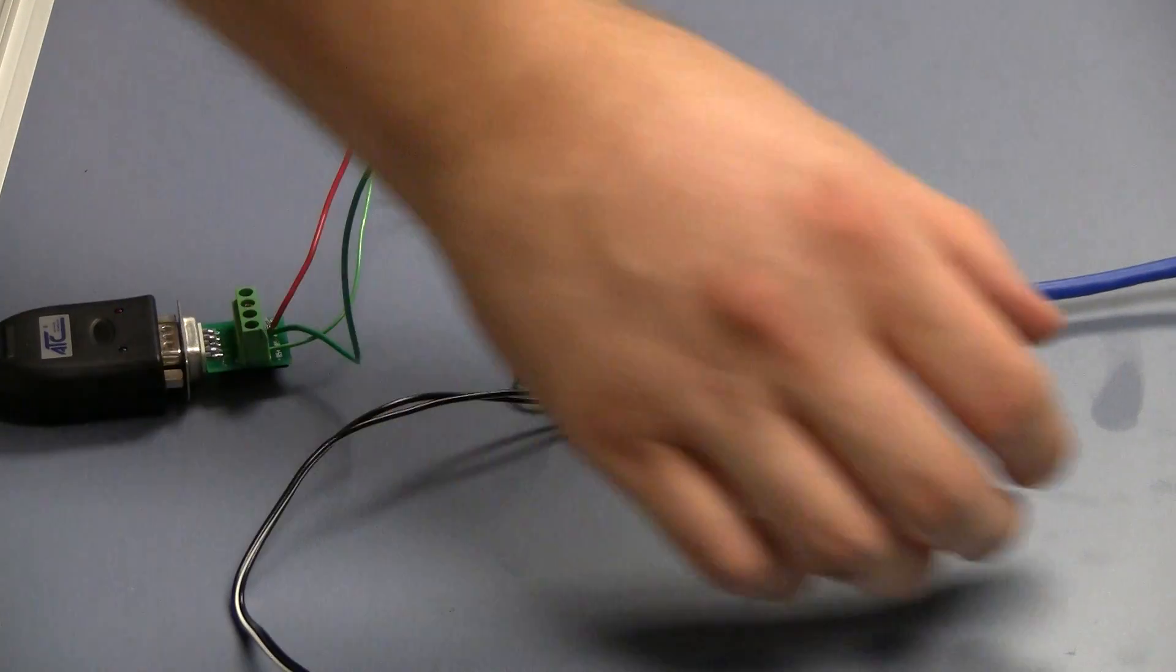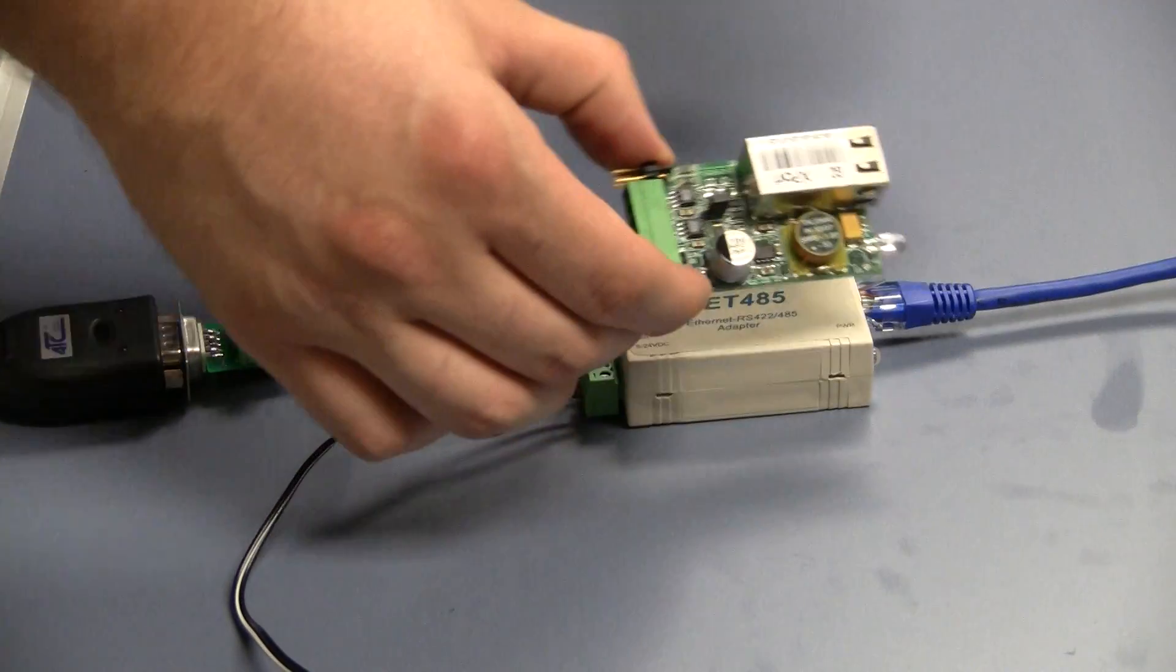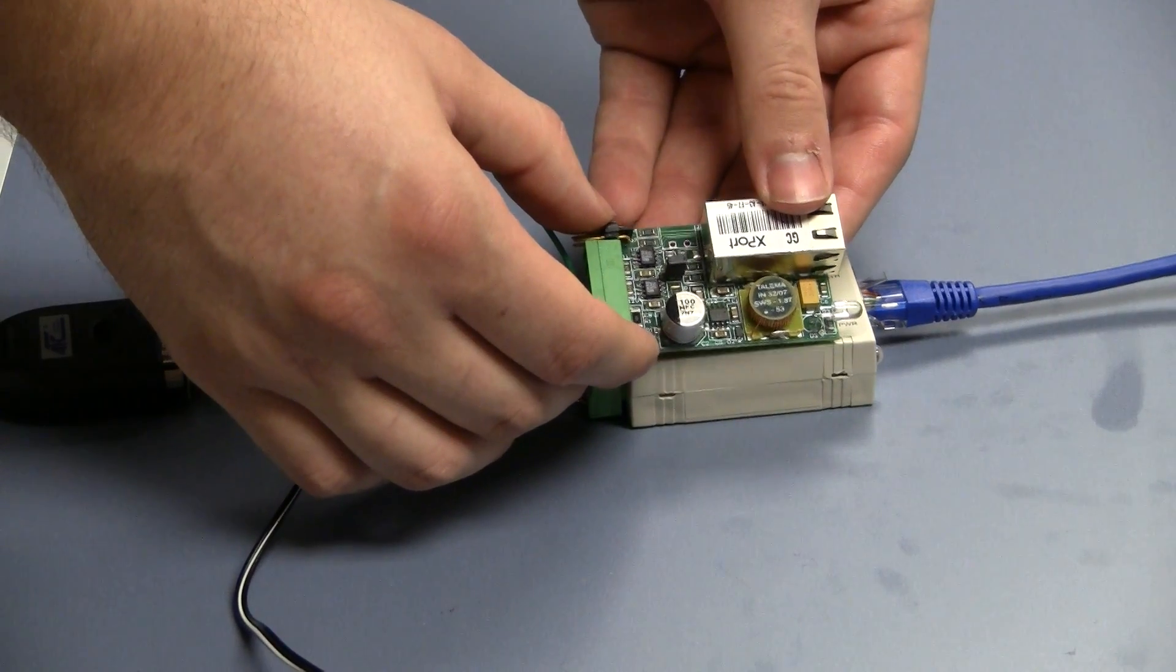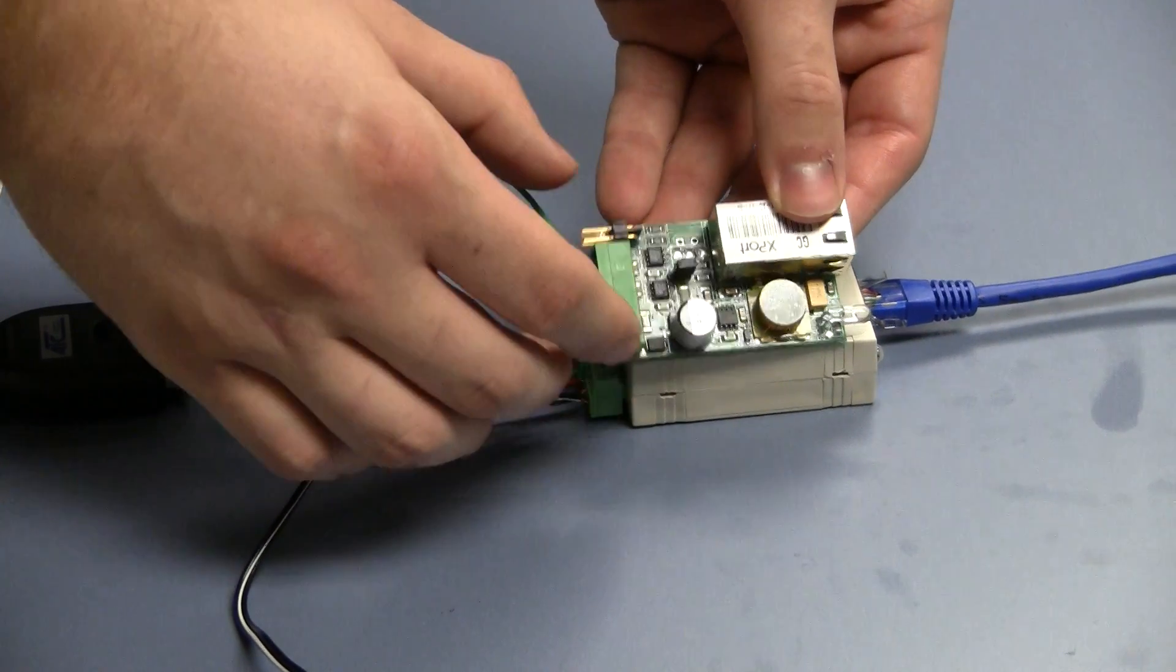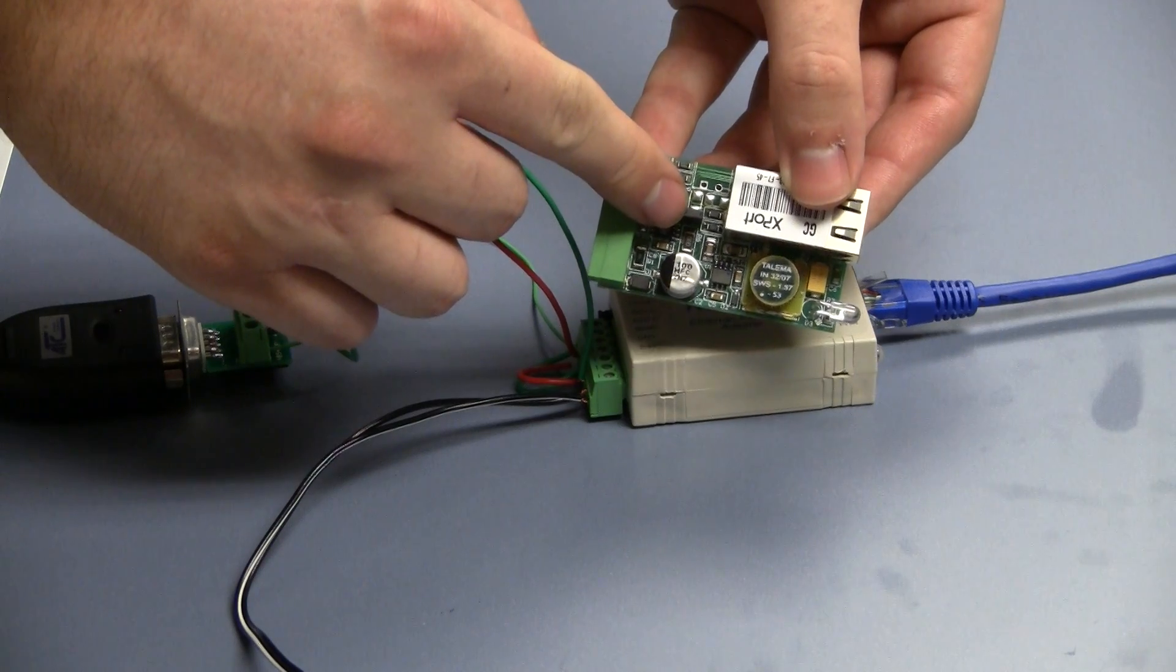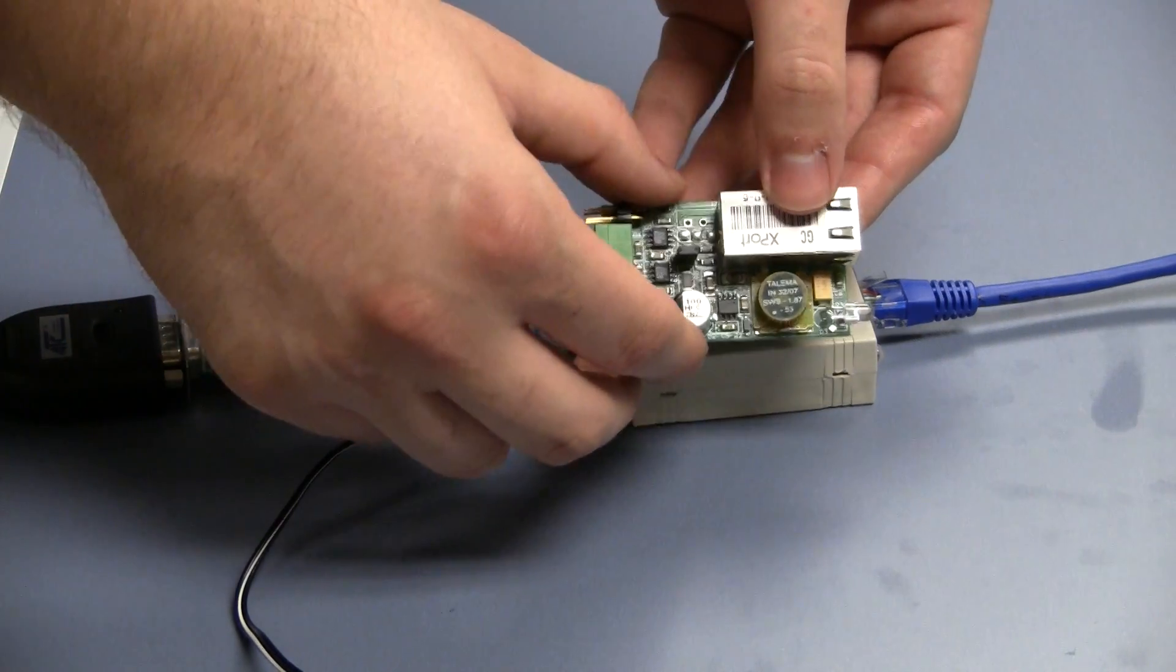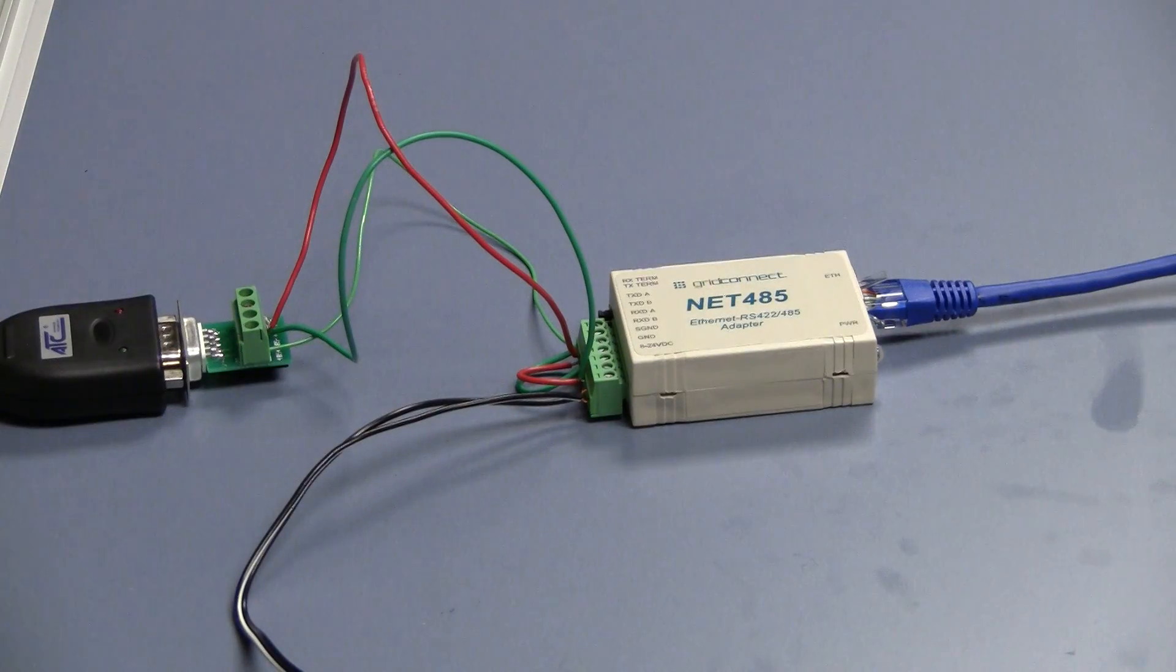And on a side note, I'd just like to say that our NET45s come shipped in half-duplex mode, as shown here by this jumper, which is set closest to the X port. And if you have any more questions, please give us a call at GridConnect or consult your user manual. Thank you.